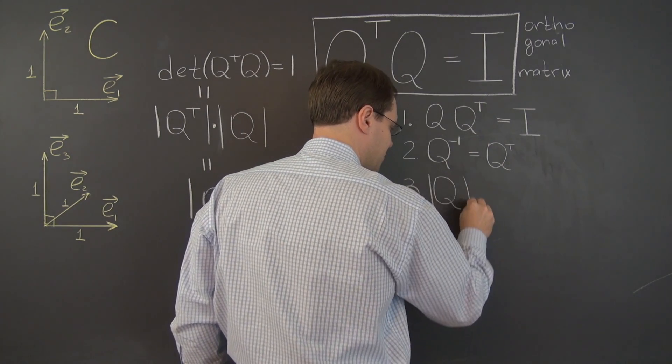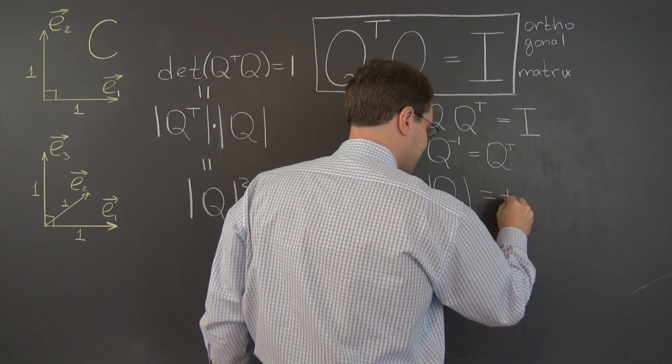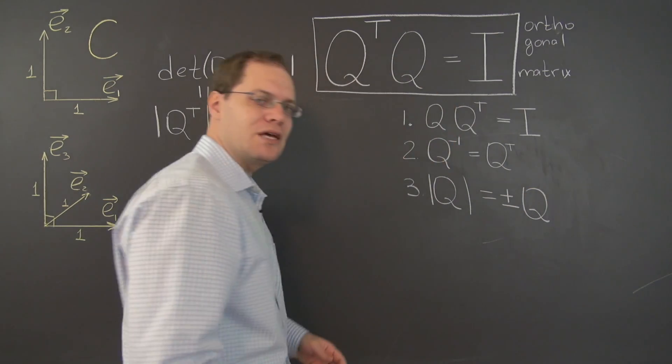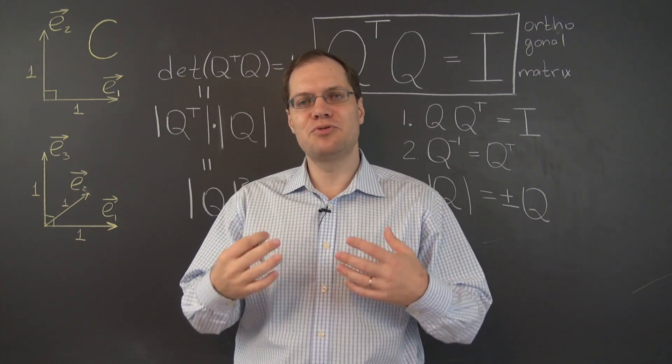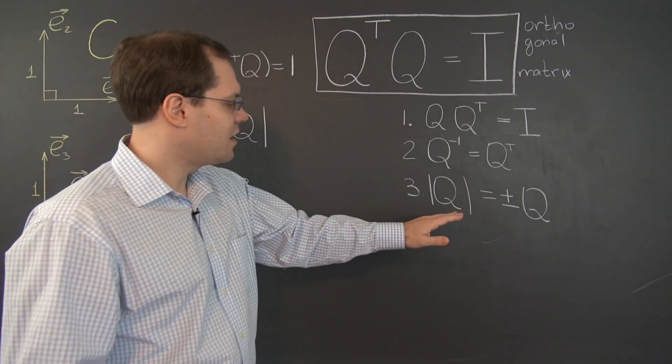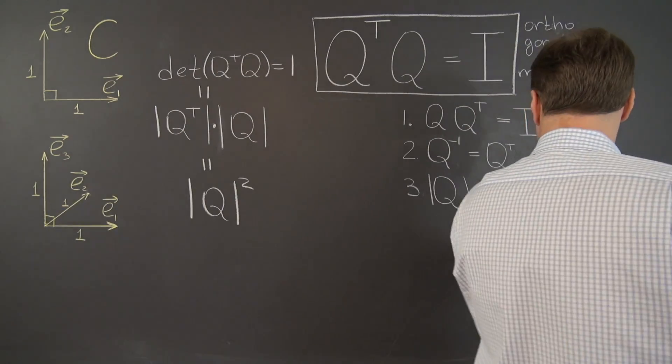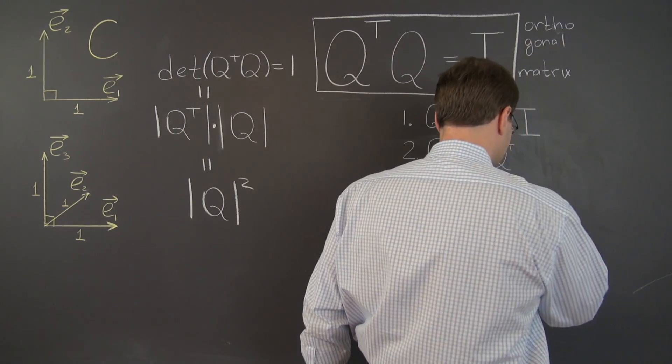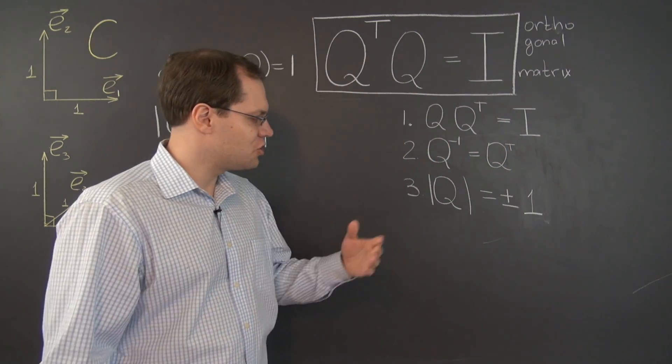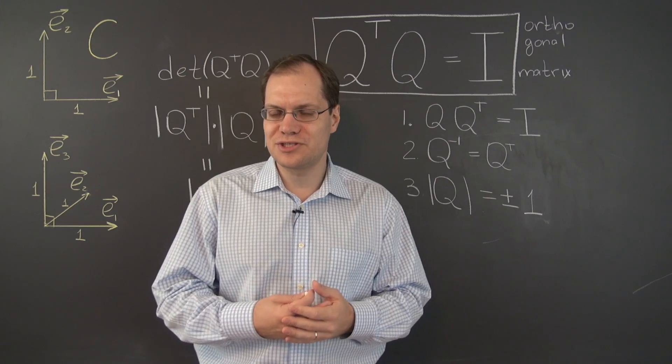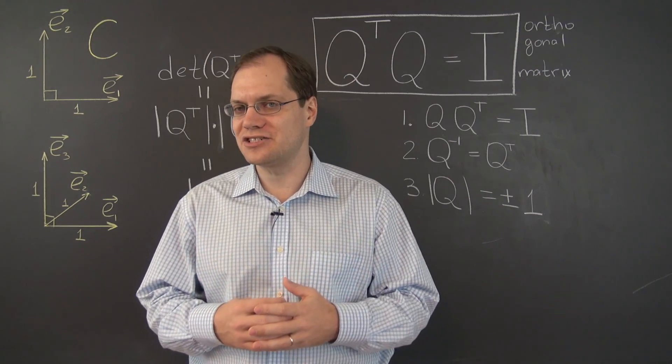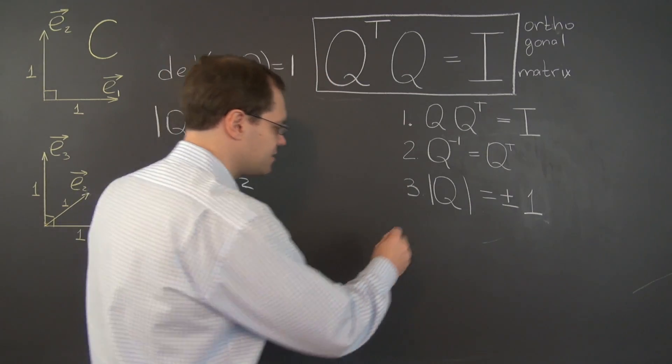We see that the determinant squared of Q equals 1. What does that imply about the determinant itself? The determinant is plus or minus 1. So the determinant of matrices that represent length-preserving linear transformations with respect to a Cartesian basis equals plus or minus 1. We will find that when the determinant is 1, it corresponds to rotations, and when the determinant is minus 1, it corresponds to reflections.